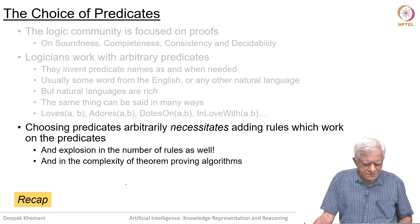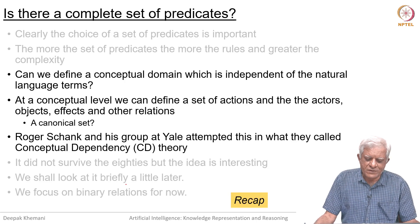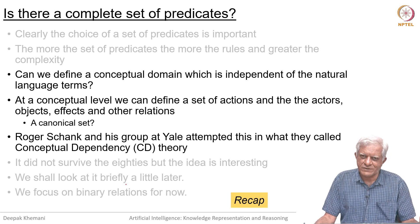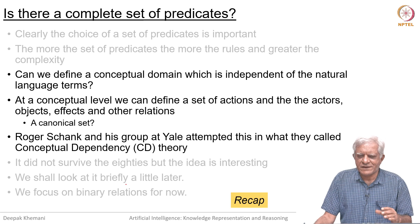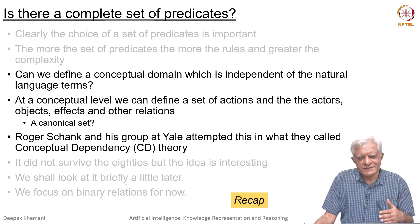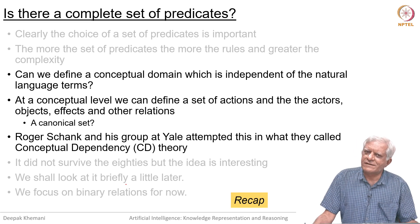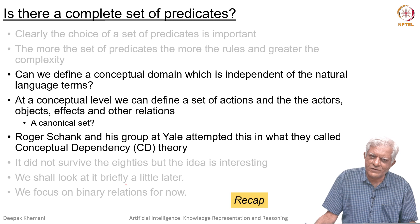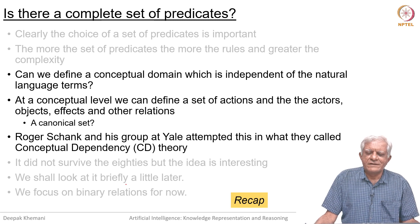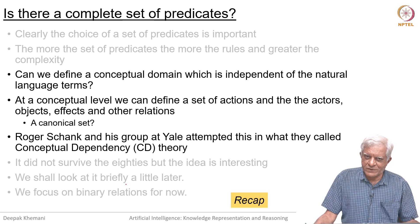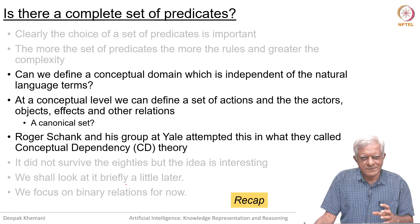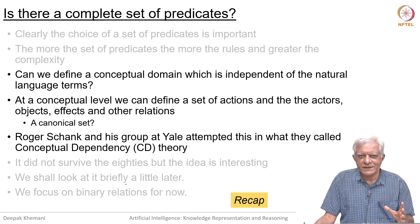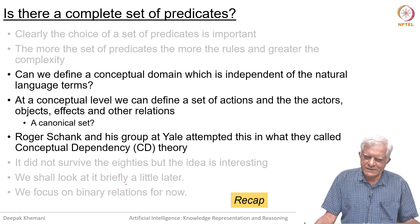What we want to look at now is: can we define a conceptual domain which is independent of natural language terms? So that the predicates we define are not essentially in English. We have already said that the name we use for a predicate is irrelevant because we can have any interpretation for any predicate. But what we are now saying is to explore the world of concepts and choose a canonical set of predicates in terms of which you will be able to express everything else.